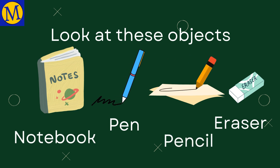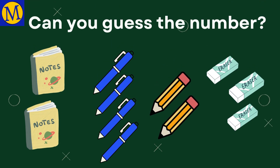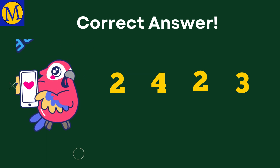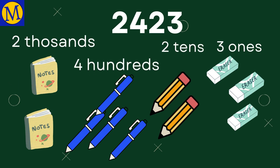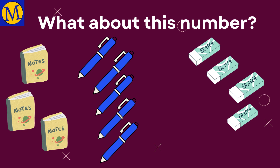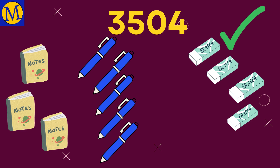Now some more fun! Look at these objects and the values assigned to them. Can you guess the number represented here using these objects? Correct — 2,423! What about this number? Yes — 3,504!